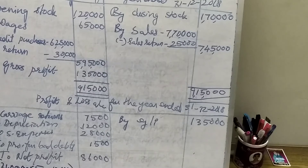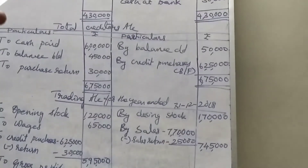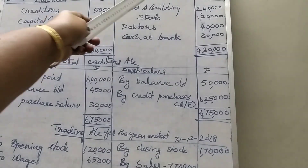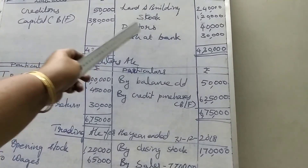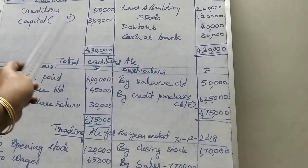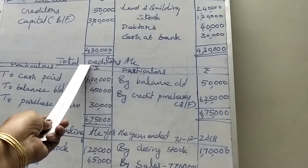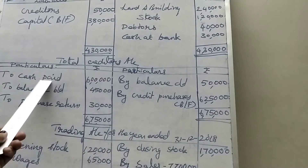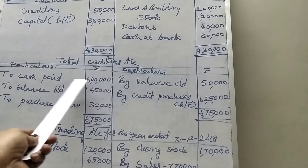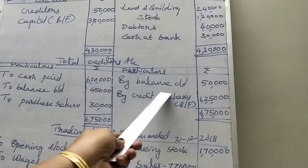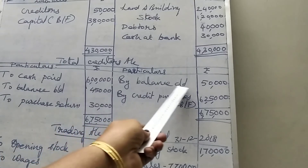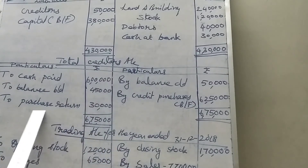Now we can easily prepare the balance sheet. First we prepared the statement of affairs to get the opening capital. Then we prepared the creditors account to find the credit purchases. Then we prepared the trading account and profit and loss account.